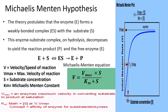This is the Michaelis-Menten equation: V equals Vmax times S divided by Km plus S, where V is the velocity or speed of the reaction, Vmax is the maximum enzyme velocity in converting the substrate to a product at saturation, S is the substrate concentration, and Km is the Michaelis-Menten constant, which represents the substrate concentration at half the Vmax. On this graph, the x-axis represents substrate concentration and the y-axis represents the velocity of the reaction.